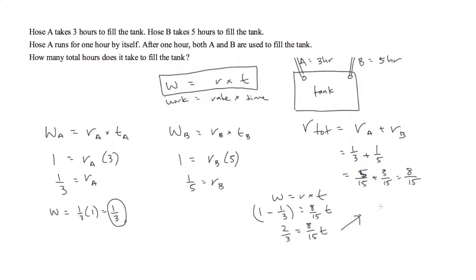And if we multiply both sides by 15 over 8, we're left with t. And we get 5 fourths is equal to t, or 1 and a quarter hour.